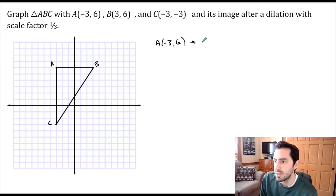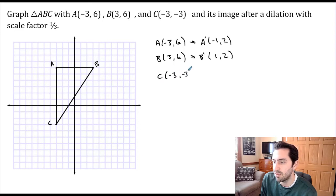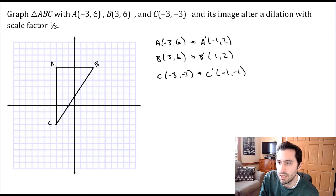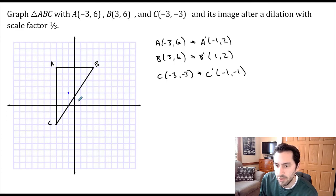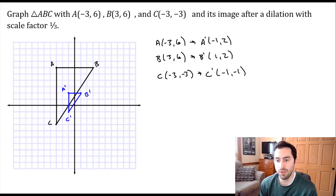Now let's use our coordinate rule with a scale factor of one-third — I'm going to multiply both x and y coordinates by one-third. A prime is at (-1, 2). For B at (3, 6), multiplying by one-third gives us (1, 2). For C at (-3, -3), multiplying by one-third gives us (-1, -1). Let me plot these points: (-1, 2) is A prime, (1, 2) is B prime, and (-1, -1) is C prime. As you can see, the scale factor of one-third shrunk the triangle down and moved it closer to the center of dilation at the origin.